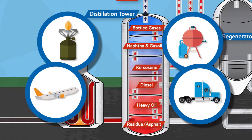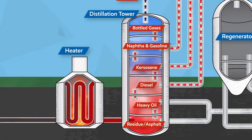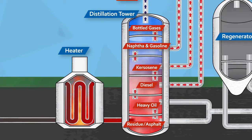The types of products that are made from the vapor are determined by the raw crude input, time of year and market demand.